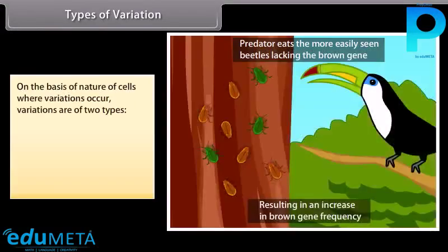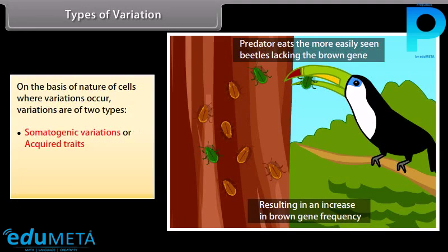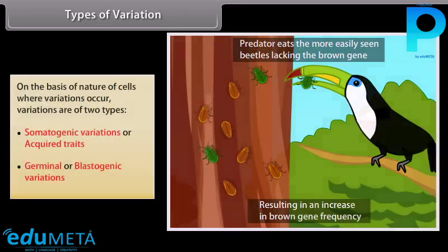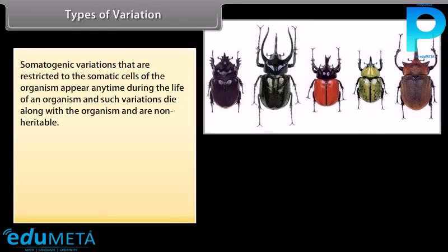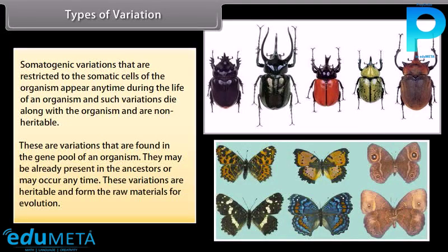On the basis of the nature of cells where variations occur, variations are of two types: somatogenic variations or acquired traits, and germinal or blastogenic variations. Somatogenic variations are restricted to the somatic cells of the organism, appear any time during the life of an organism, and such variations die along with the organism and are non-heritable. Germinal variations are found in the gene pool of an organism, may be already present in ancestors or may occur any time, are heritable, and form the raw materials for evolution.